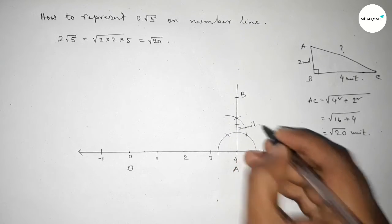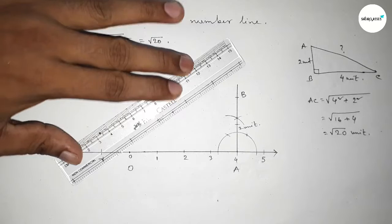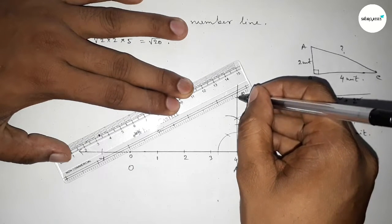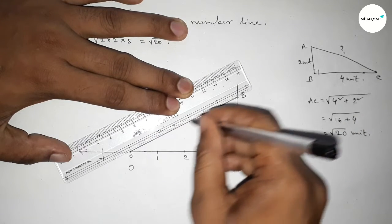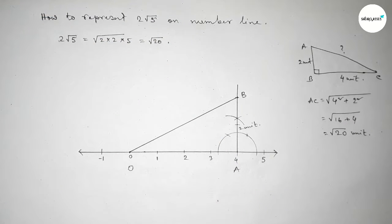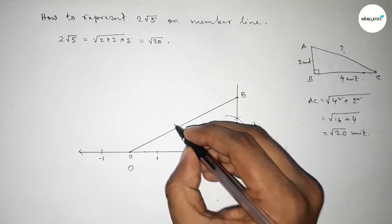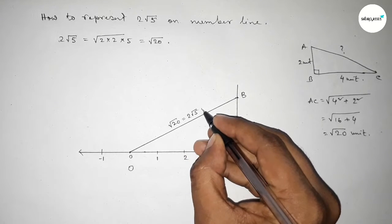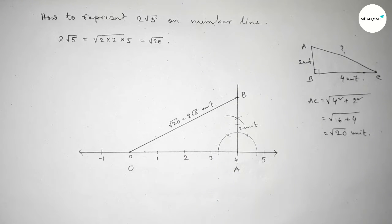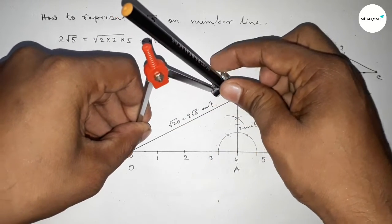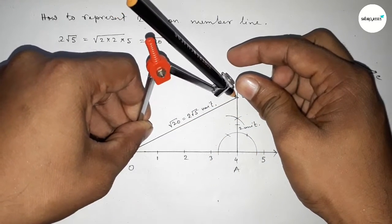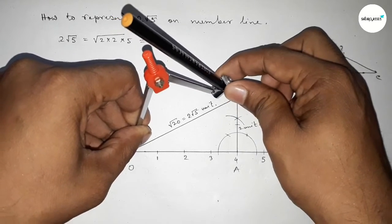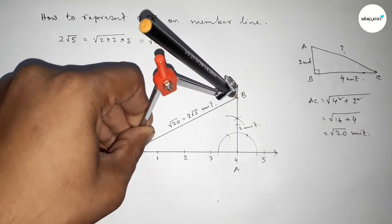Now joining O and B first. From right angle triangle OBD, this is obviously √20 equal to 2√5 unit. Now taking the length OB equal to √20 or 2√5 by using compass by this way and drawing here an arc which meets the number line at a point.